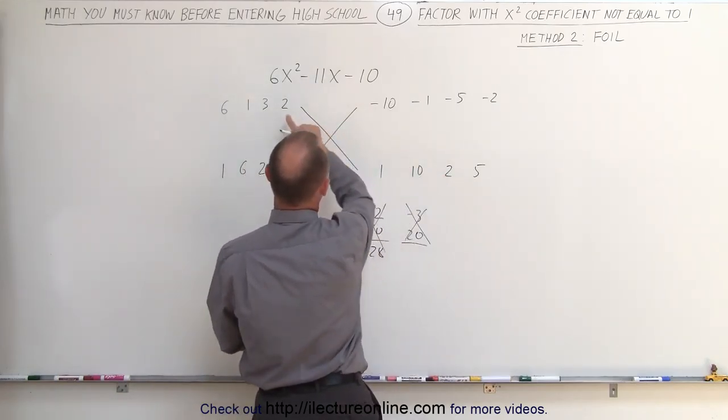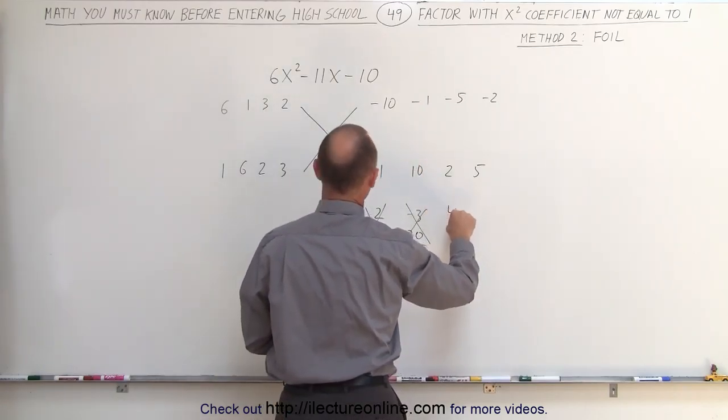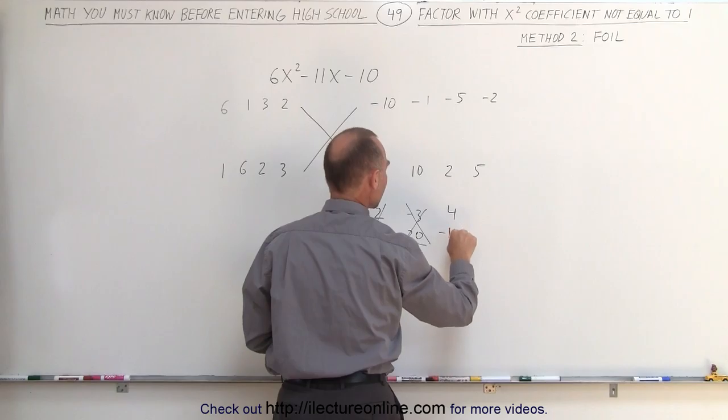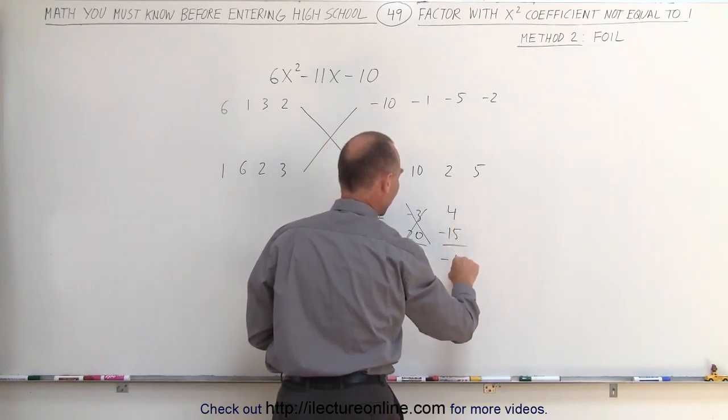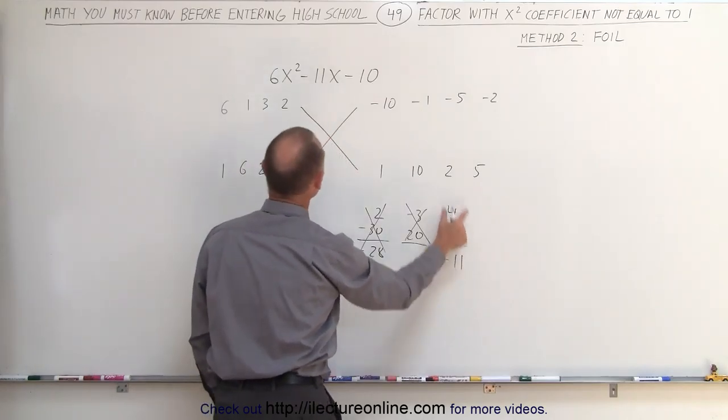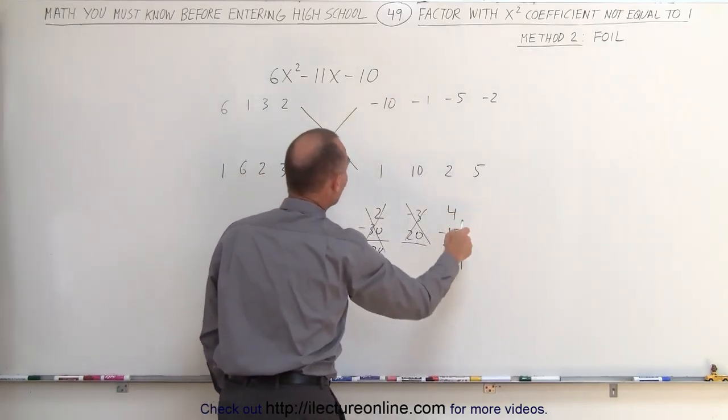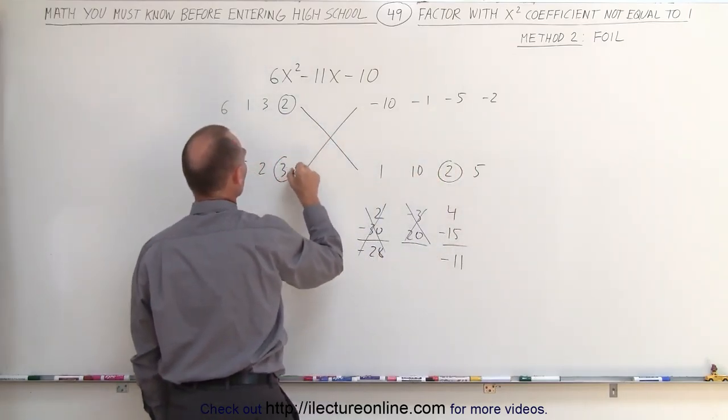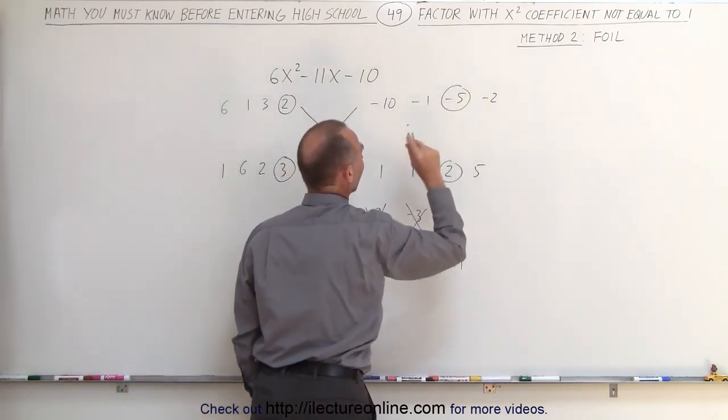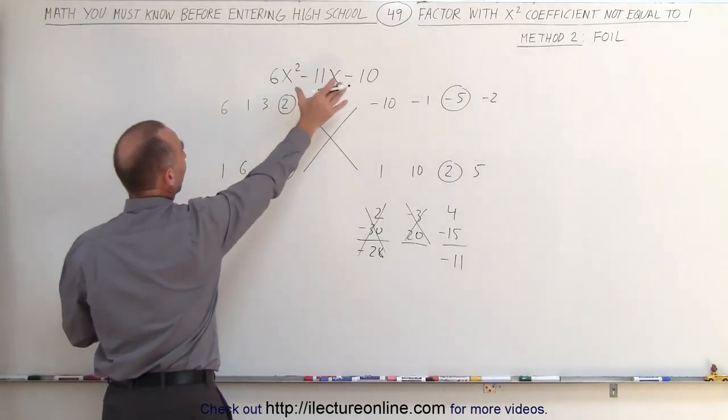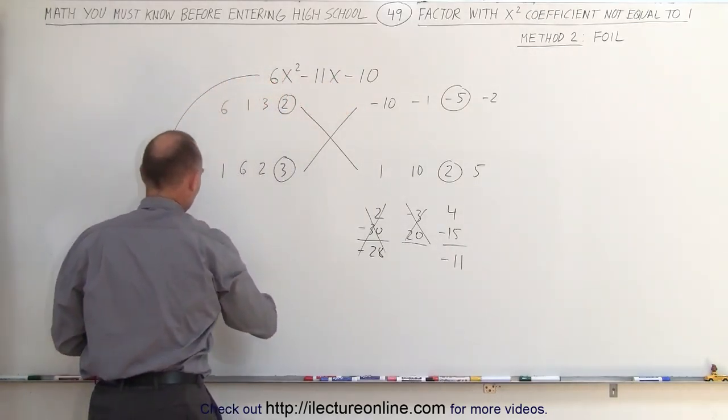So we have 2 times 2, which is 4, and 3 times negative 5, which is negative 15. When I add those together, wow, I'm in luck. After just 3 tries I get the right number. Negative 11 matches negative 11, which means I got the number 2 multiplied times 2, I have the number 3 multiplied times negative 5, and I have the correct solution. Which means I can now go ahead and write this trinomial in factored form.